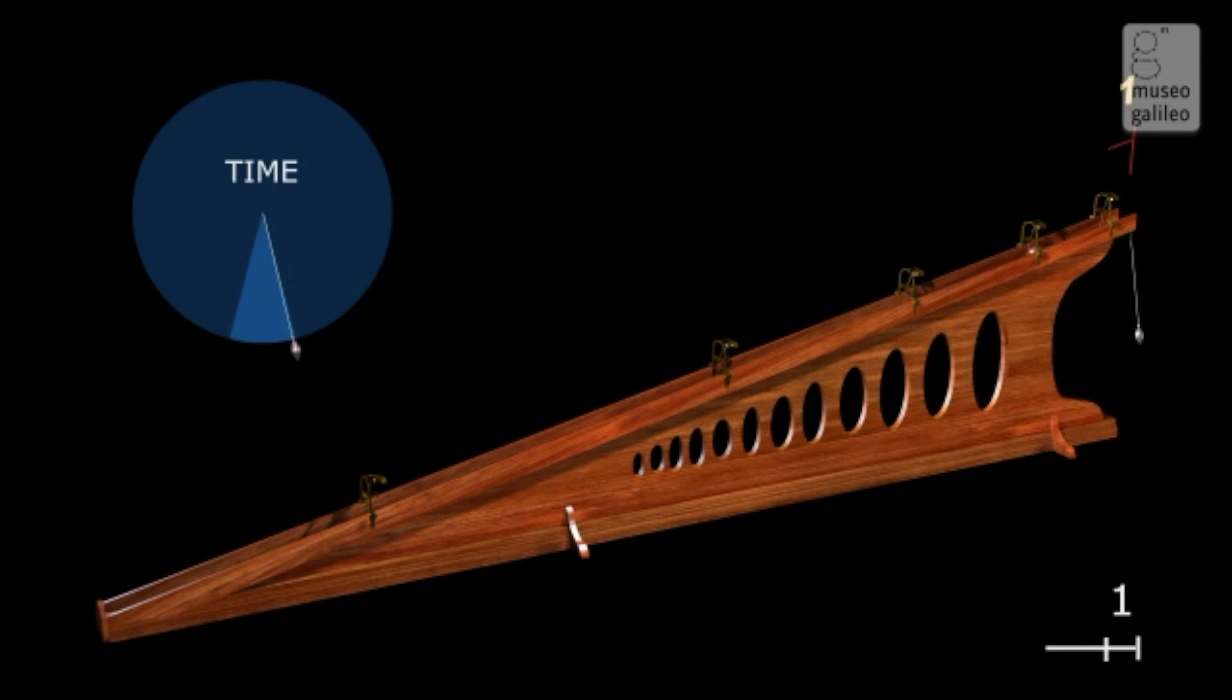In each successive oscillation of a pendulum, the sphere traversed spaces that increased in accordance with the sequence of odd numbers.